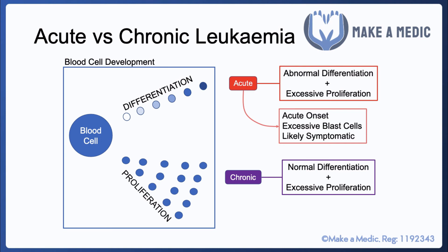Given that it's sudden onset, it really impacts the bone marrow. Patients are likely to be symptomatic — this typically ends up being the consequences of bone marrow failure. If your bone marrow is getting infiltrated and filled up with these abnormal white cell blasts, it means that there's less space for red blood cells, platelets, and other white blood cells to be produced.